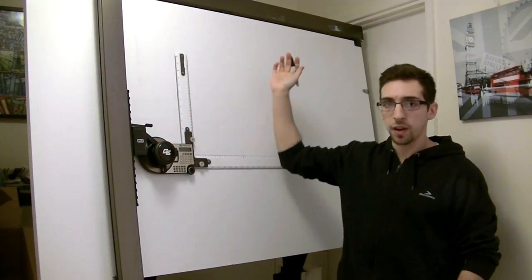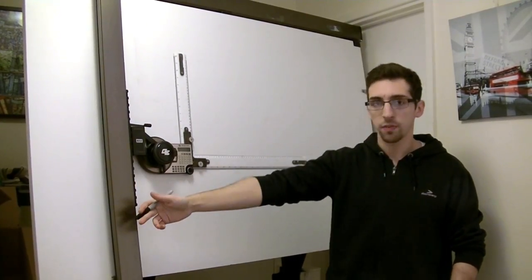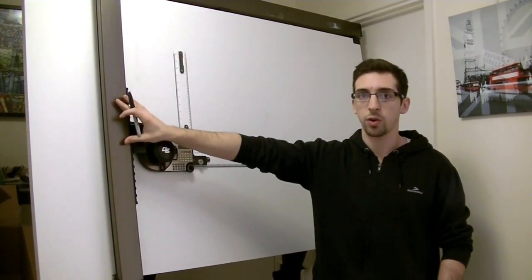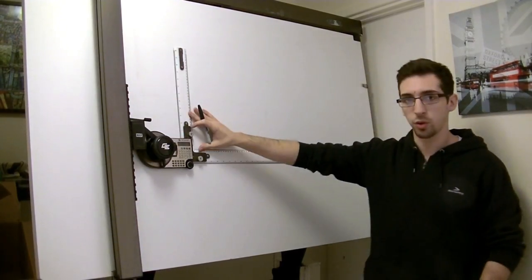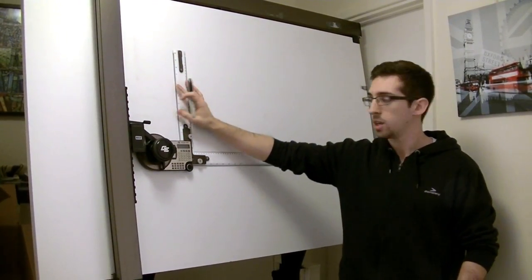It measures 95cm by 1.5m. It has two rails, one horizontal and one vertical, two rulers in cm and inches, and one protractor.